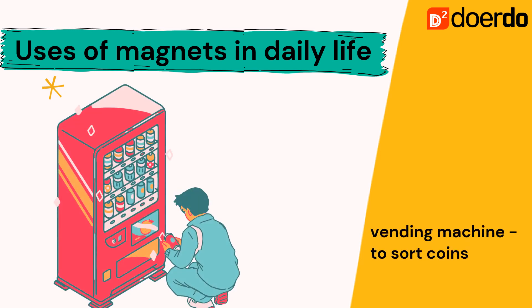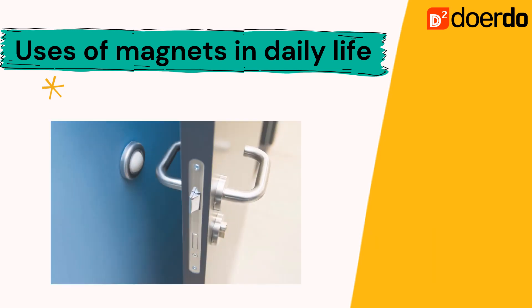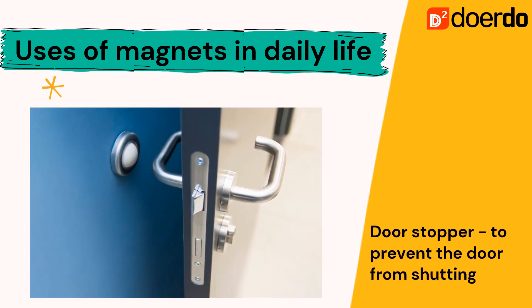Then there's the vending machine, which sorts out coins. So whenever you drop your 5-cent, 10-cent, 20-cent, 50-cent, and one-dollar coins, the machine sorts them out using magnets. Remember, our coins are actually magnetic, so all these magnetic coins used in daily life are sorted out in the vending machine using magnets.